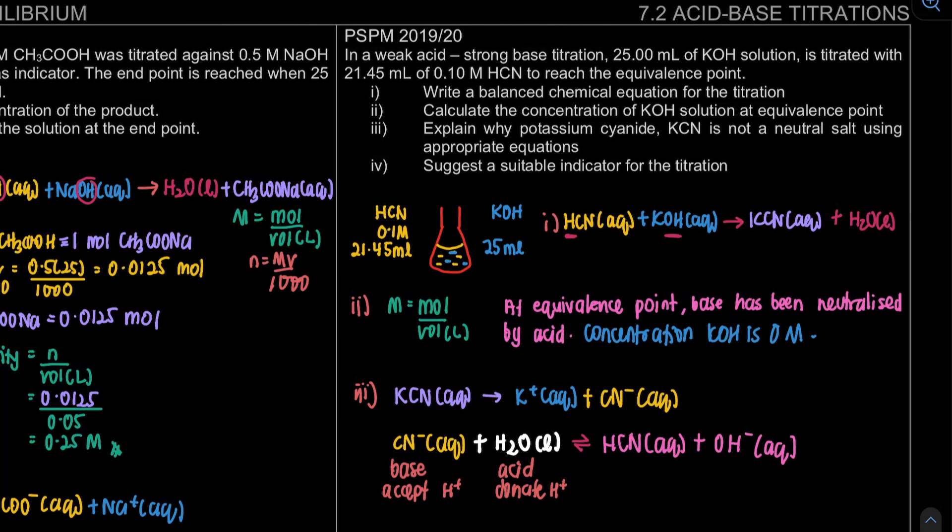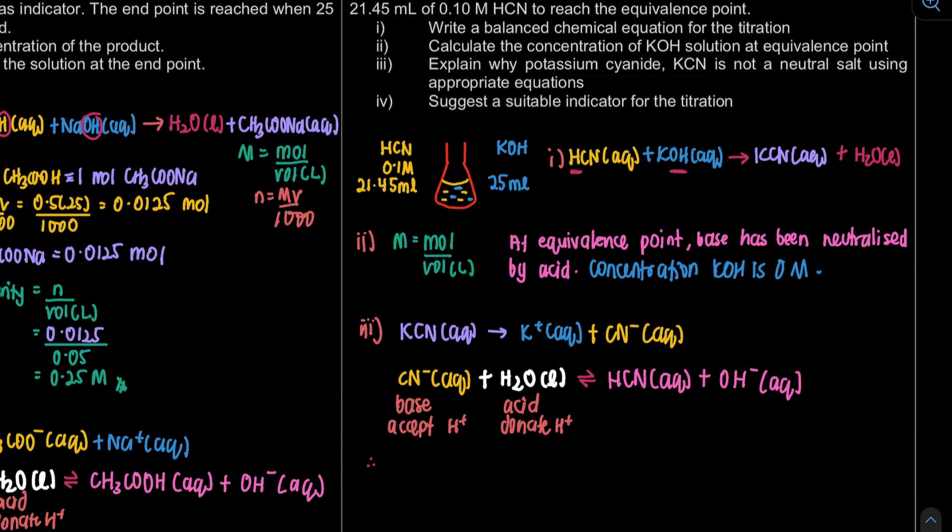The question explains why KCN is not a neutral salt using appropriate equation. So from the equation itself, we can see that there's the presence of OH minus. OH minus means that it is not a neutral one, it's a basic salt. So we write the OH minus shows that the salt is basic with pH more than 7. Why more than 7? Because if it is acidic, pH less than 7. If it's basic, pH more than 7.